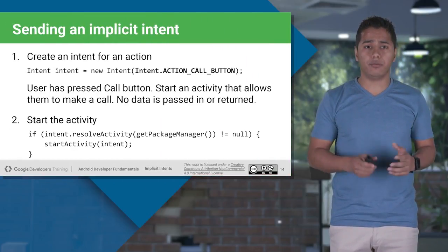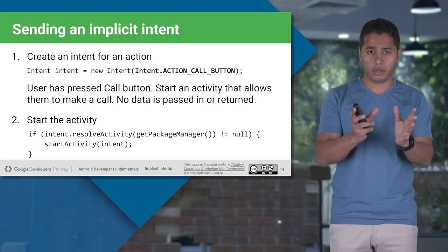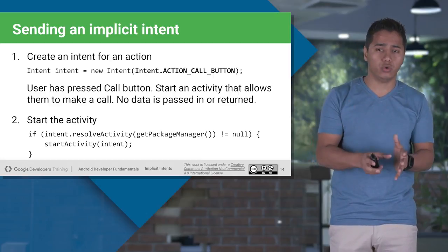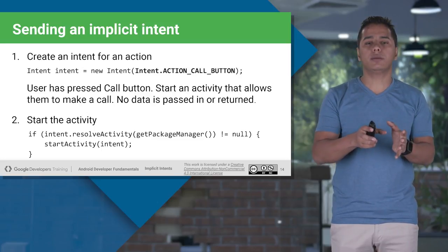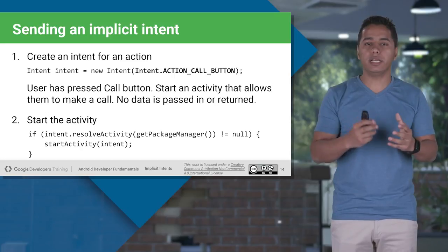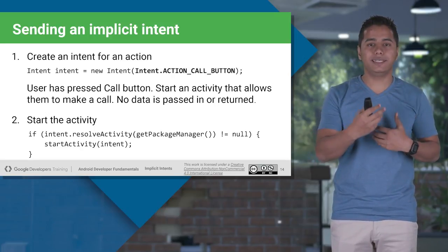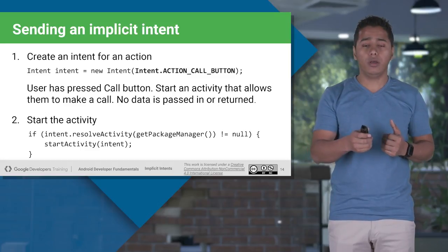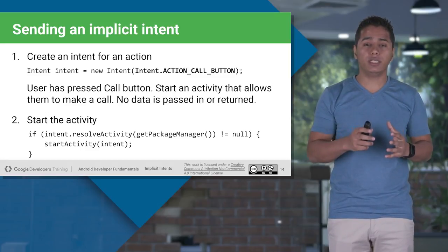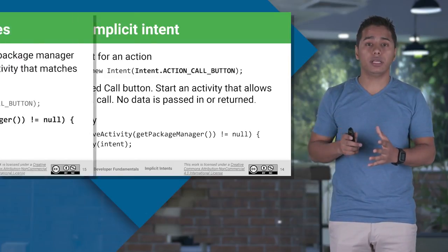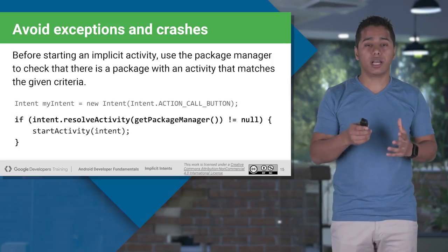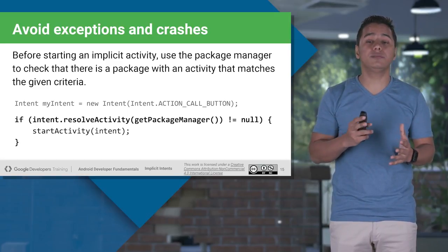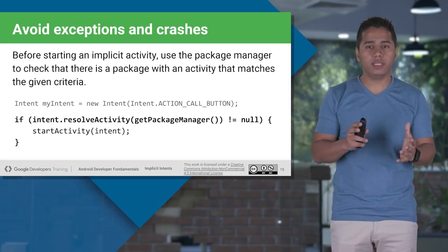To send an implicit intent, you create an Intent object and provide an action inside it. It's not necessary to include data — an implicit intent can be created with just an action. For example, to create an intent for a call, you provide the action Intent.ACTION_CALL_BUTTON. Before firing this intent, you should check whether there is a package that can handle the request using the condition Intent.resolveActivity with getPackageManager. Only if this doesn't return null should you fire the intent.